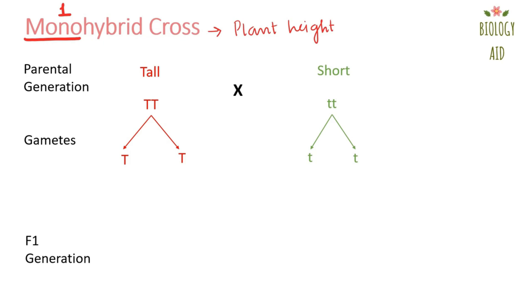Now, these gametes will fuse with one another and they will give rise to the first filial generation or F1 generation. What will be the possibility of plants that will be produced in the F1 generation? One possibility could be that first capital T will fuse with first small t, which will lead to the formation of pea plant with genetic combination of capital T and small t. Similarly, in all other cases, the offspring produced will be of genetic composition capital T small t.